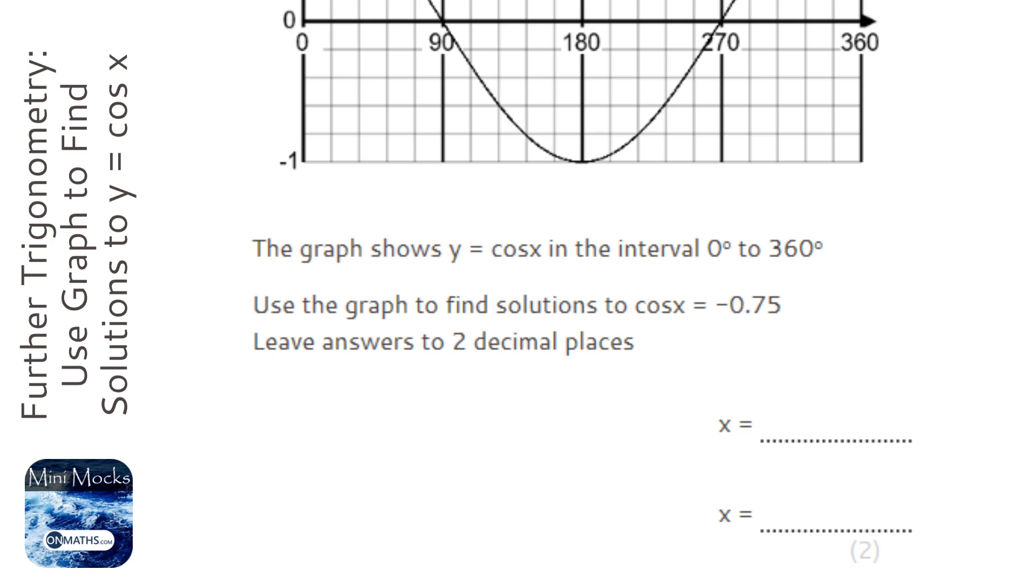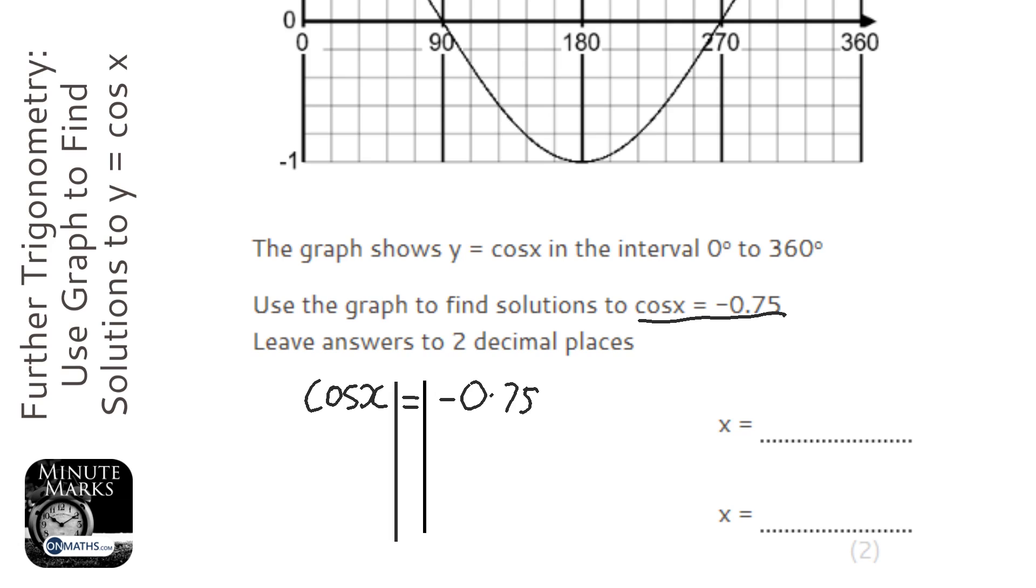Okay, so you might look at this question and think, oh wow. Okay, so we've got an equation, so cos x equals minus 0.75, and all we need to do is put our lines in.